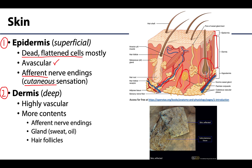In dissection, when we say to reflect or remove the skin, this means both the epidermis and the dermis. It's usually fairly distinguishable from the deeper superficial fascia, which appears mostly yellow with some larger blood vessels associated with it. This deeper superficial layer is sometimes referred to as the fatty layer.